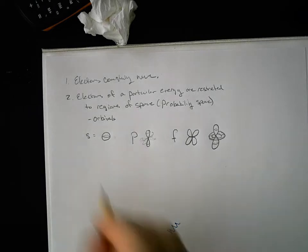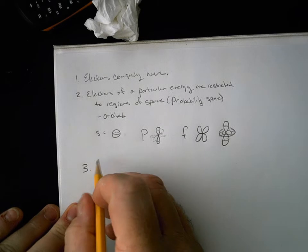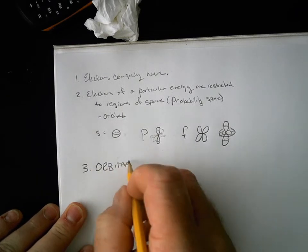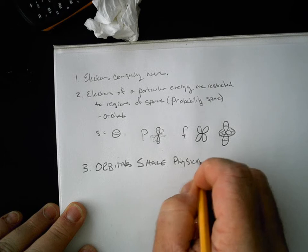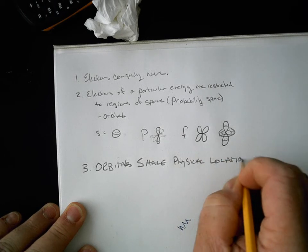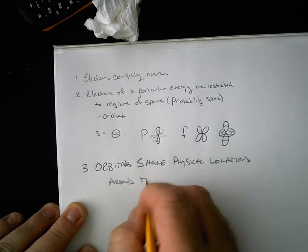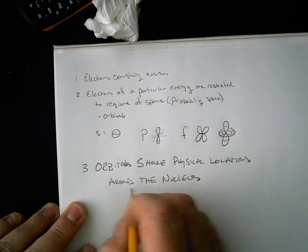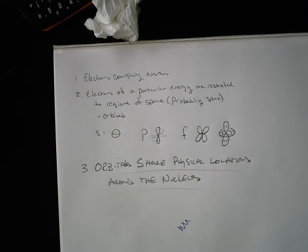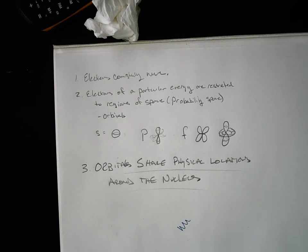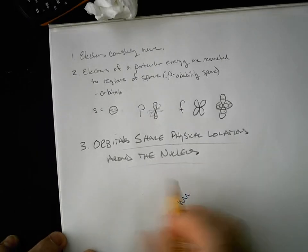But here's the catch. That the orbitals share physical locations around the nucleus. In other words, you can be in a particular location in an S orbital, and another electron at another time might be in that exact same spot, but they have an energy being in a different orbital. And so, here's the analogy I came up with.